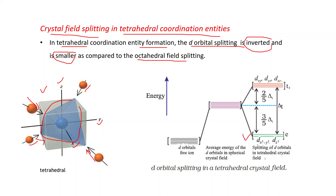dx²-y² and dz² form one set known as E, with lower energy. dxy, dyz, and dxz form a set designated as t₂, and these orbitals have higher energy. The difference between the E and t₂ levels is known as crystal field splitting energy. Since this splitting takes place in the tetrahedral coordination entity, it is represented as Δt.